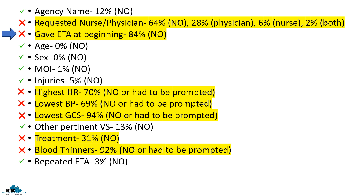When it comes to specifics about the patient, vital signs was probably the area with the most room for improvement. Remember to say your highest heart rate, lowest blood pressure, and lowest GCS, which often was not done. When comparing emergent with non-emergent patients, the same areas were consistently shown to be lacking, but reporting treatment performed was actually one of the most important areas that was left off. This is really important for our triage nurses so they can have a good idea of where to put our patients. And finally, don't forget blood thinners — these can be a game changer and an important fact to share.